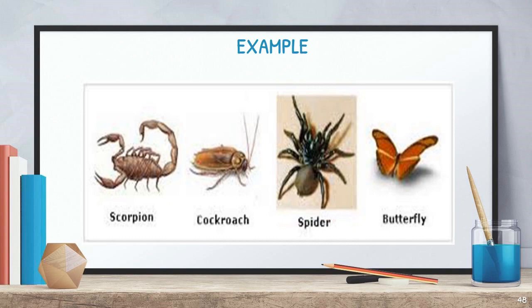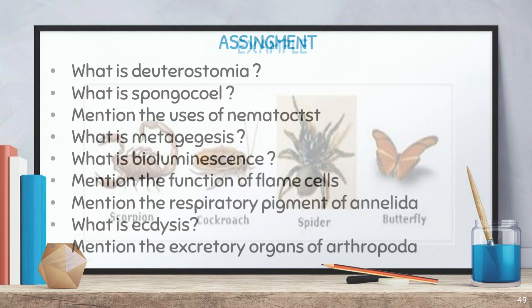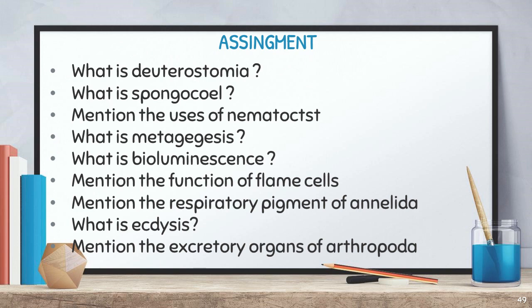We have completed the first seven phyla today. Here are some assignment questions: What is Deuterostomia? What is spongocoel? Mention the uses of nematocyst. What is metagenesis? What is bioluminescence? Mention the functions of flame cells. Mention the respiratory pigment of Annelida. What is ecdysis? Mention the excretory organ of Arthropoda. Please review today's portion and we will meet in the next class.